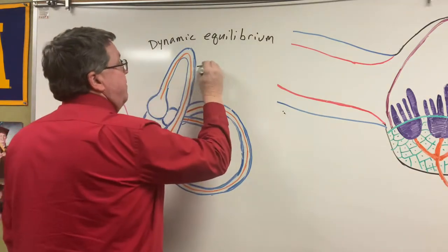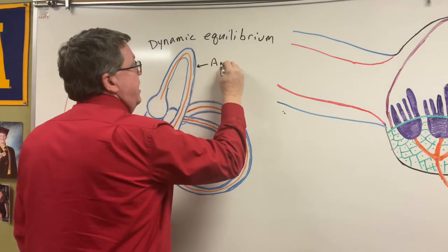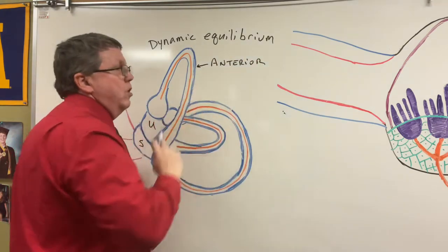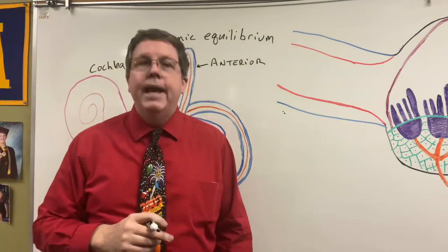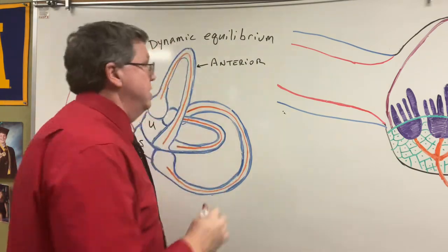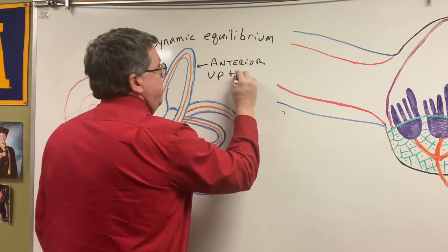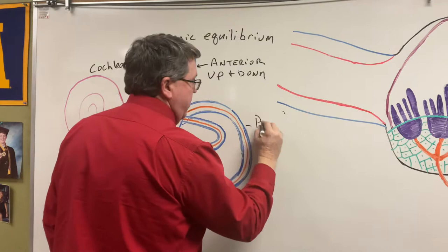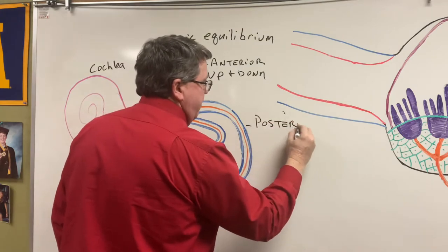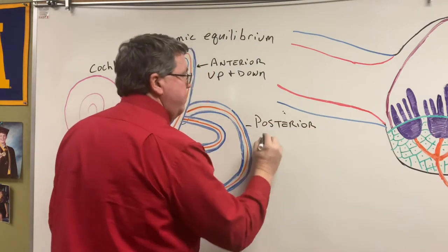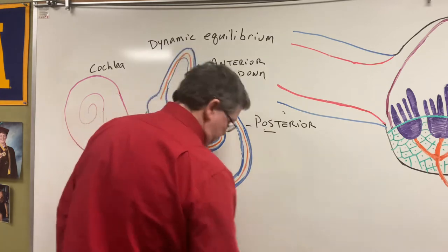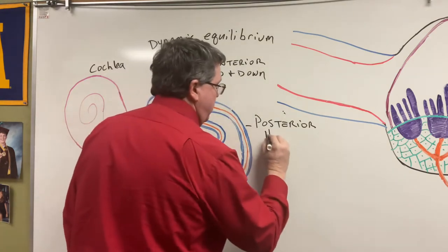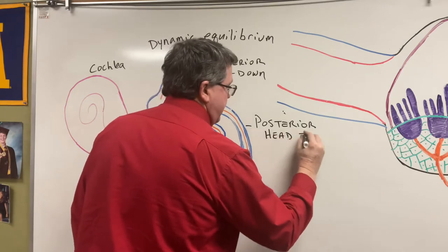We actually have three semicircular canals. The first one is the anterior semicircular canal. This is going to be responsible for motions of the head going up and down. Then I have this big one — this is going to be my posterior semicircular canal, and this is going to be responsible for head tilt. So when I tilt my head, this one is going to sense it.